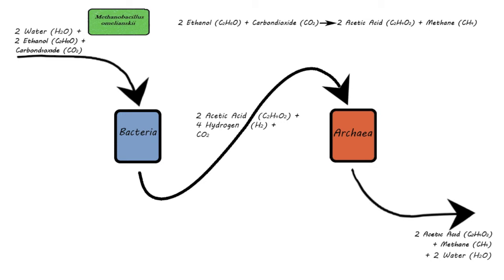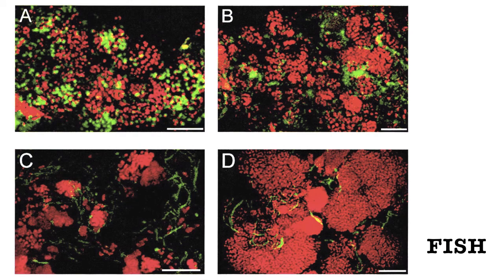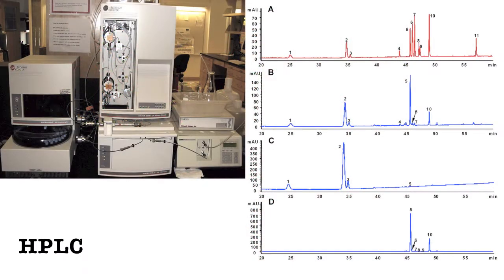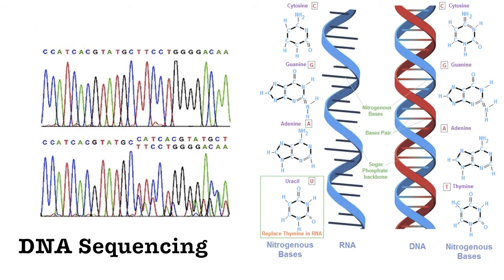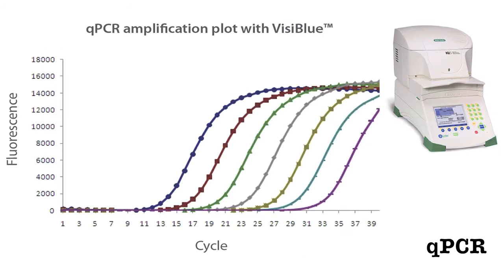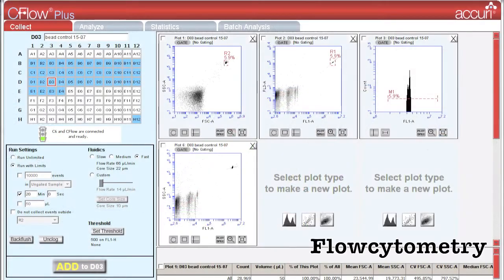Currently, there is an endless amount of techniques used to study these microbial communities. The most important ones are: fluorescent staining, in which different types of cells get a different color; high-performance liquid chromatography, used to detect and quantify certain molecules; chemostats, used to grow microorganisms in a controlled environment; DNA sequencing, which can unravel the full genome of all microorganisms present in a mixture; quantitative PCR, which detects and quantifies target DNA molecules; and flow cytometry, in which cells are counted and sorted according to type.